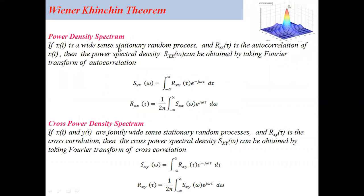Power density spectrum. We are considering a signal X(t), which we assume to be a wide sense stationary random process, and the auto correlation is given by Rxx(τ). The power spectral density Sxx(ω) can be obtained by taking the Fourier transform of the auto correlation. You can see the expressions written here. If you take the Fourier transform of the auto correlation function, you will get the power spectrum.